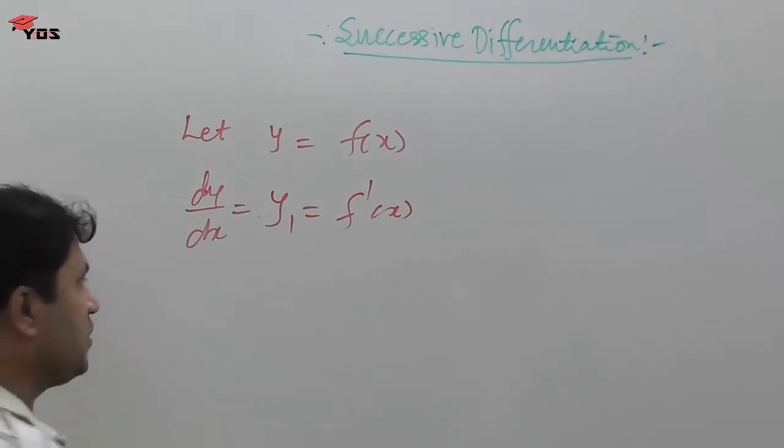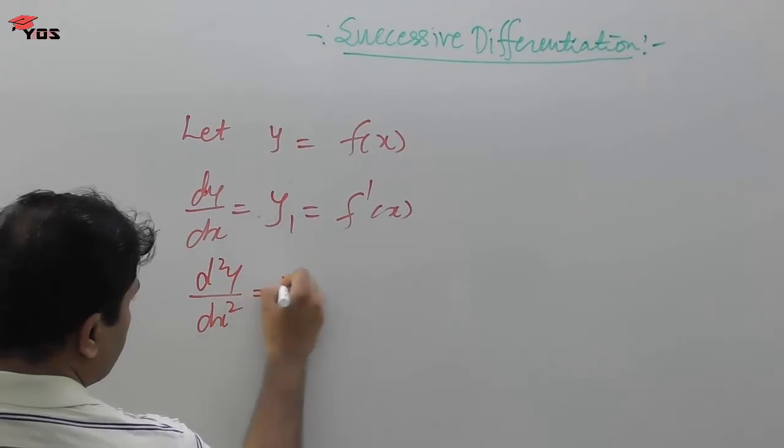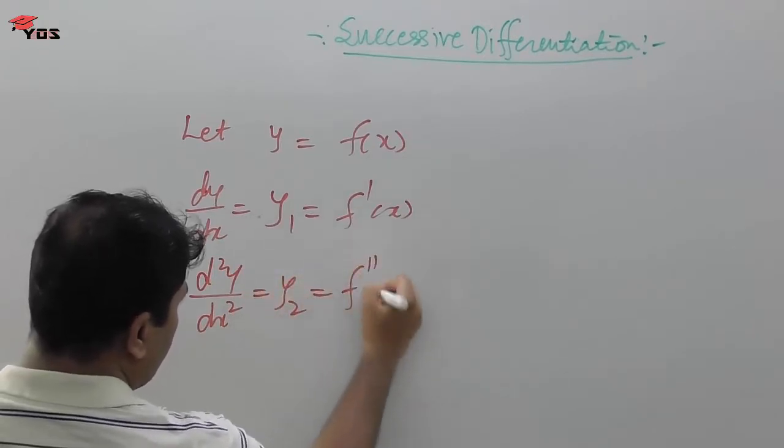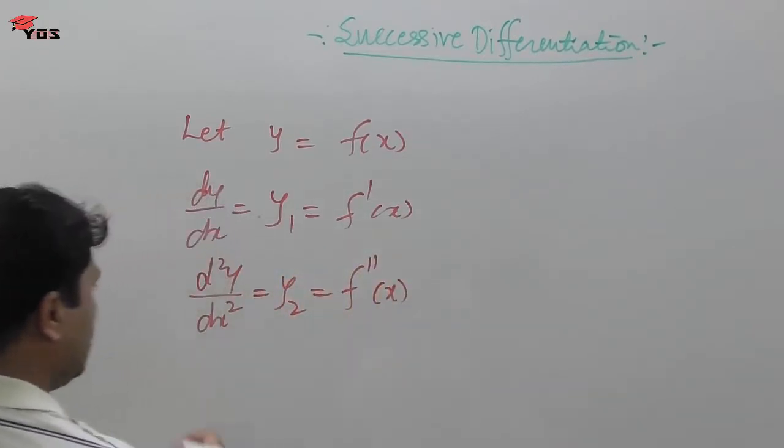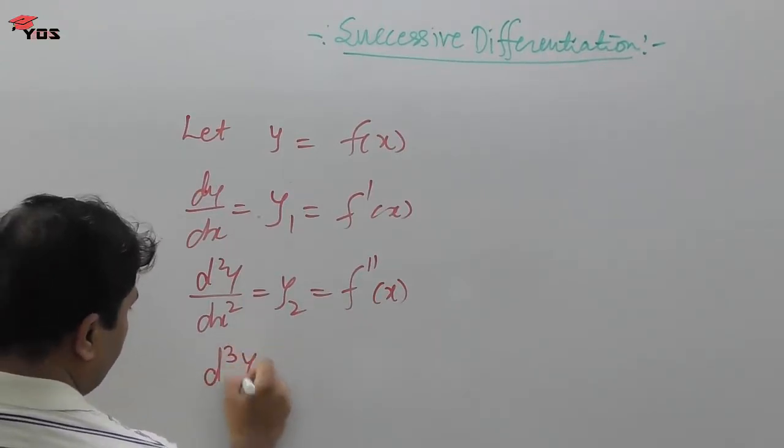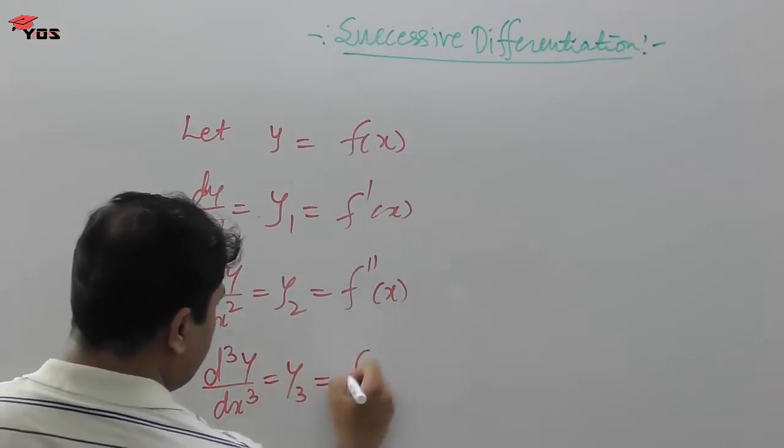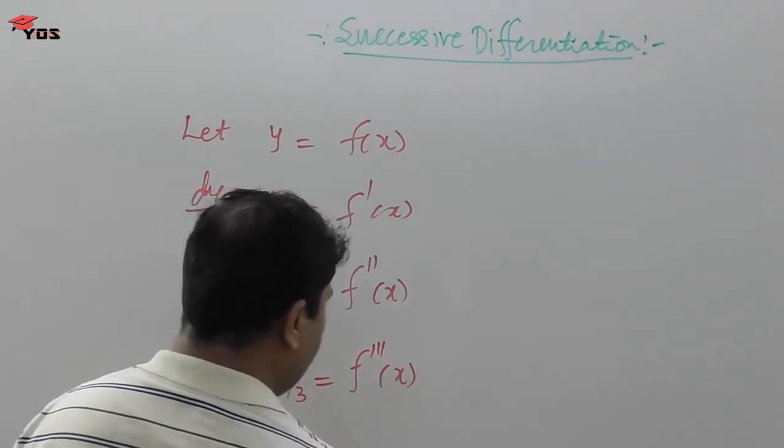Now, again differentiate this and we get d²y by dx² equals y₂ equals f double prime of x. Again, we differentiate this derivative and we get d³y by dx³ equals y₃ equals f triple prime of x.